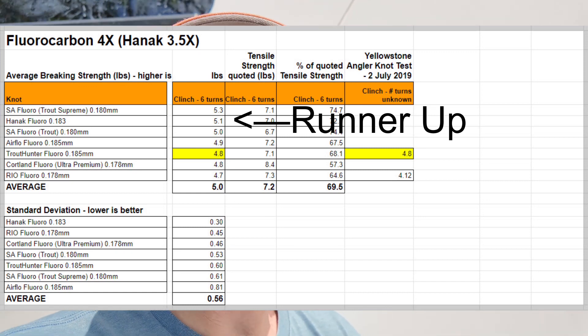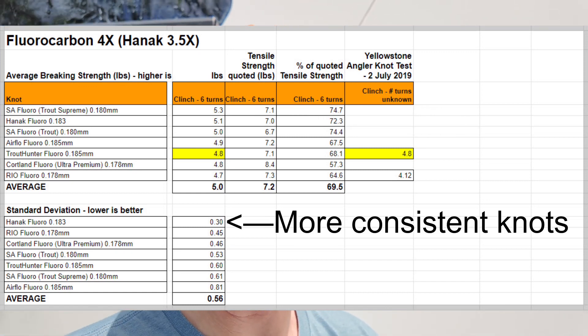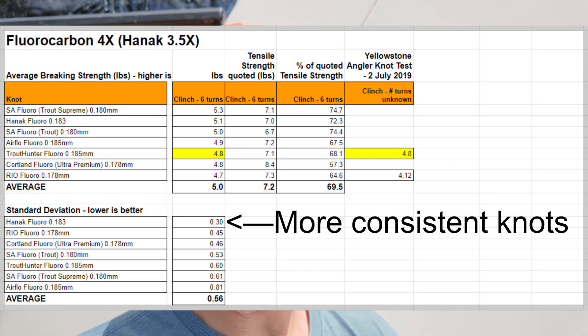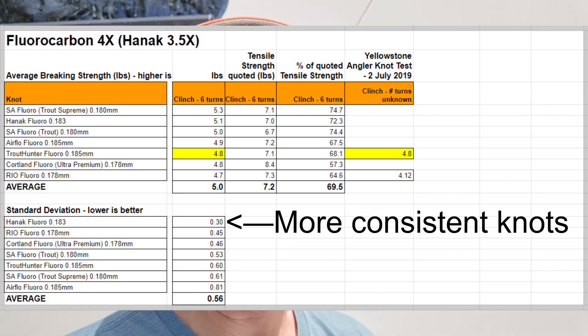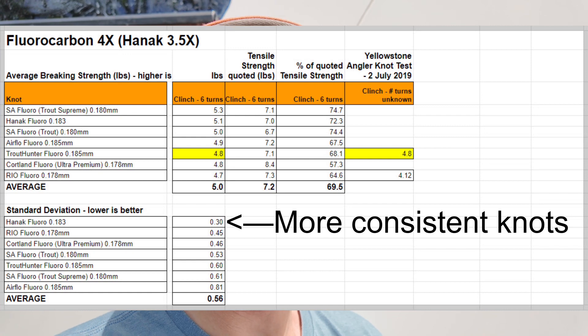But crucially, the Haneck ties much more consistent knots, so the standard deviation for my strongest versus my weakest knot was much closer for the Haneck 3.5X.